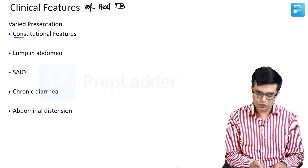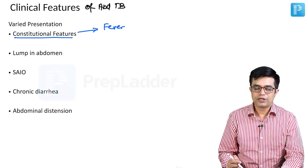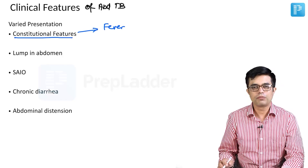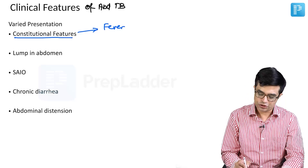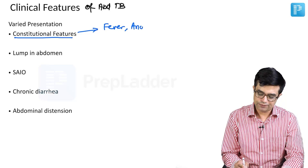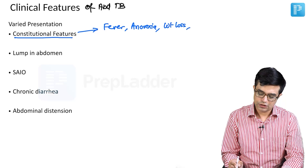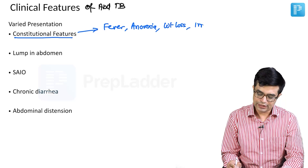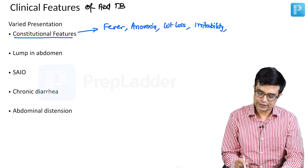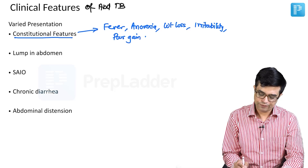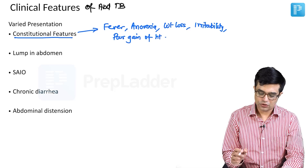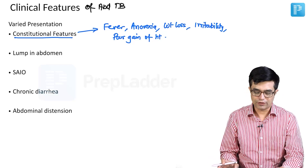First of all, we have the constitutional features. Constitutional features will include fever — fever may or may not be associated with evening rise in temperature. There will be anorexia, there will be weight loss, there will be generalized irritability, and there will be poor gain of height. These are the constitutional features initially that you will find.